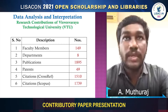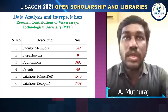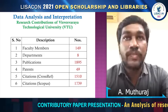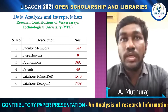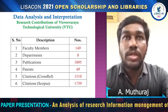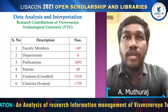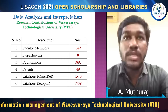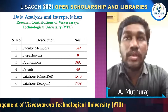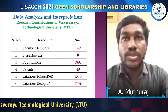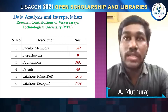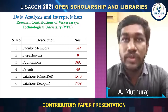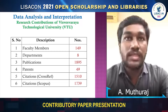Data Analysis and Interpretations. Table 1 shows the research contributions of Viswaveswaraya Technological University. VTU has 149 faculty members across eight departments, having published 1,895 publications and received 1,510 citations from Google Scholar and 1,739 citations from Scopus.